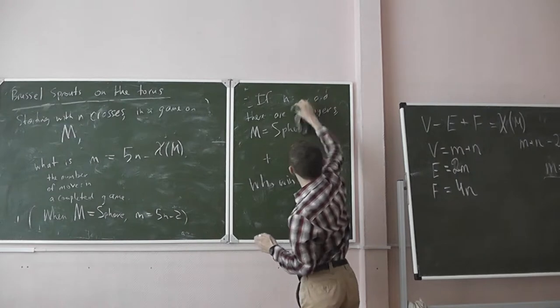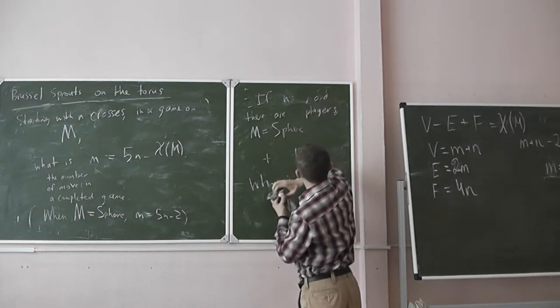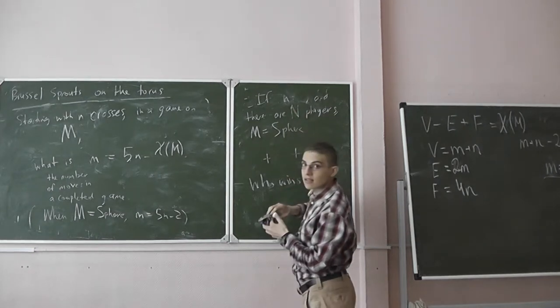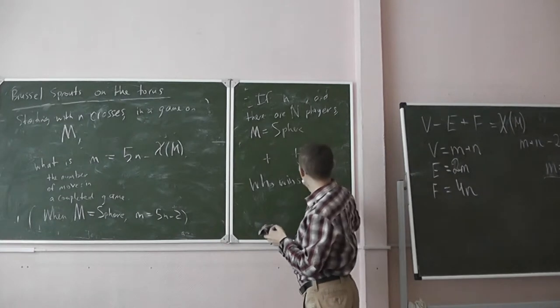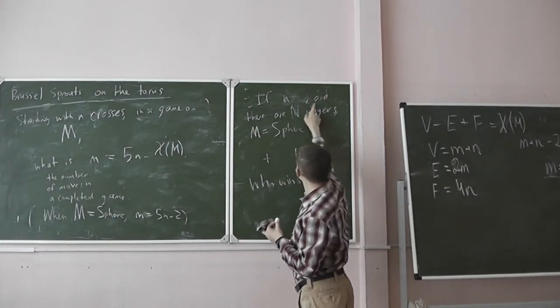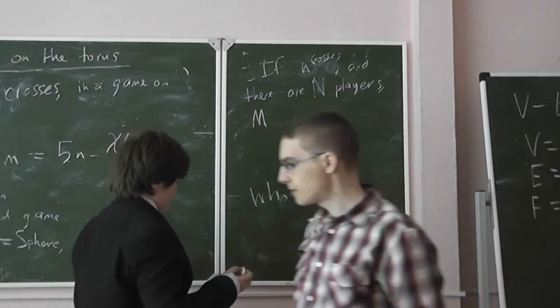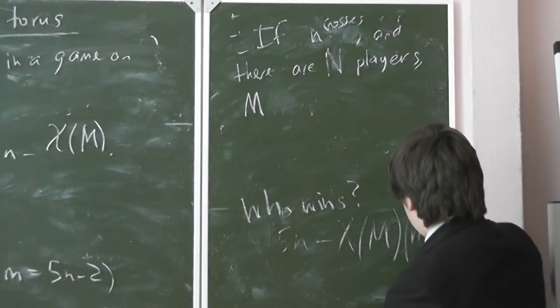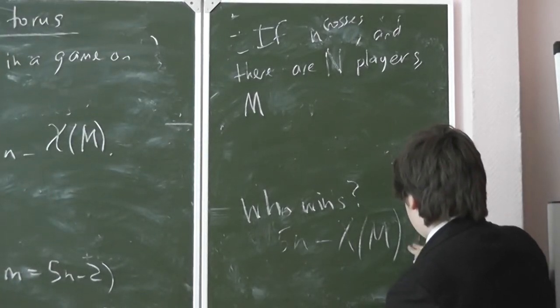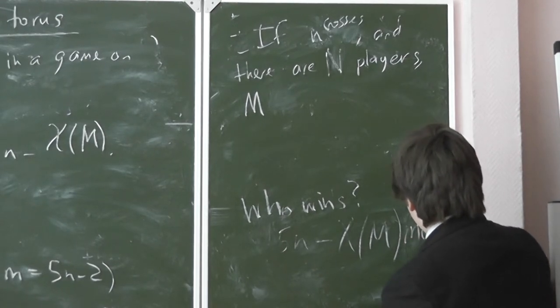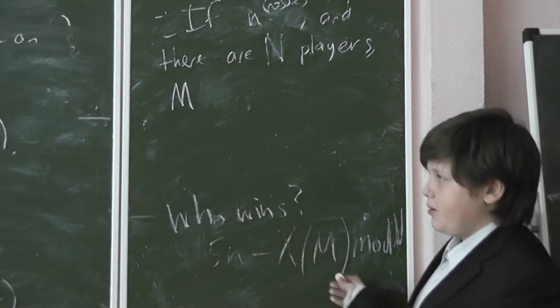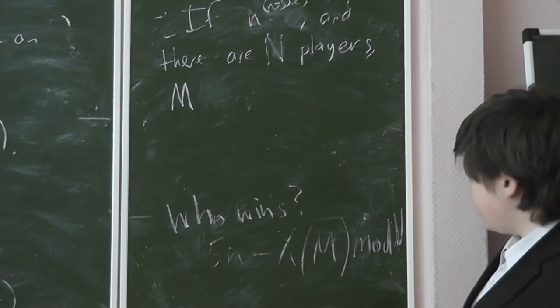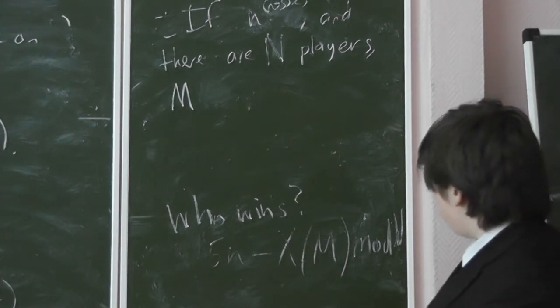If you have n and you have m players—what's that? Remainder. So, can you write down a formula for who wins? Not in brackets. This is the number of the player who wins. So player p wins if p is equal to 5n minus i mod m.